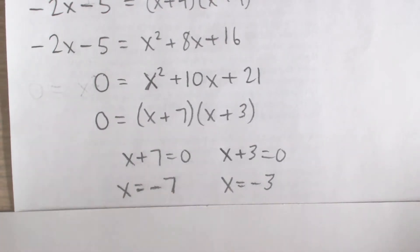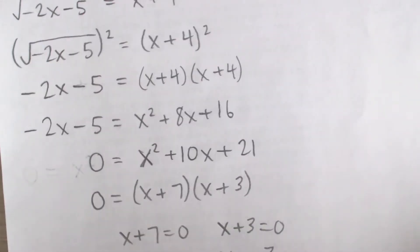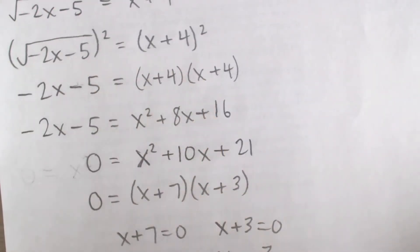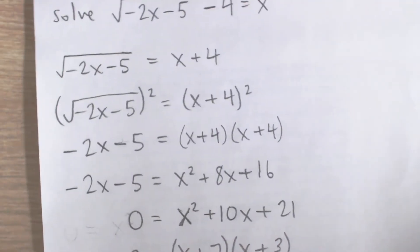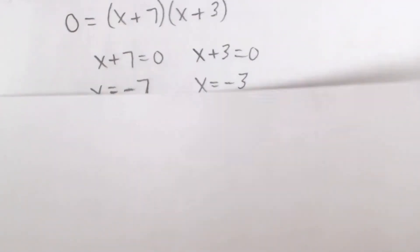But we have to check these answers because whenever you square both sides of an equation, you could introduce what's called extraneous solutions, or solutions that are not actual. You might find solutions at the end that are not actual solutions of the original equation. So here we go, got to plug those in.